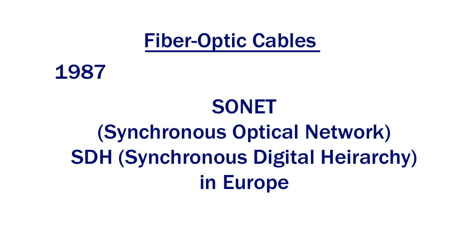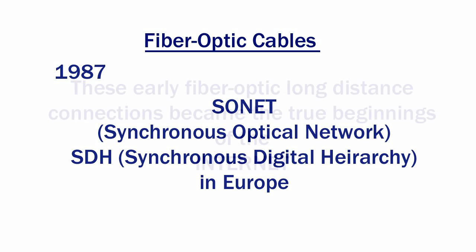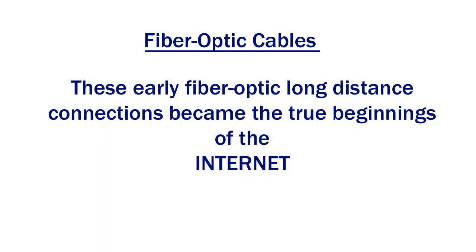When all of these competing carriers adopted the same standard, it made all interconnections simple. In actuality, this standardized method of intercommunications across the civilized world was the true beginnings of what we know as the internet today. Prior to SONET and SDH, those interconnections were extremely expensive and cumbersome, which contributed to preventing the internet from really reaching most parts of the world as we know it today.